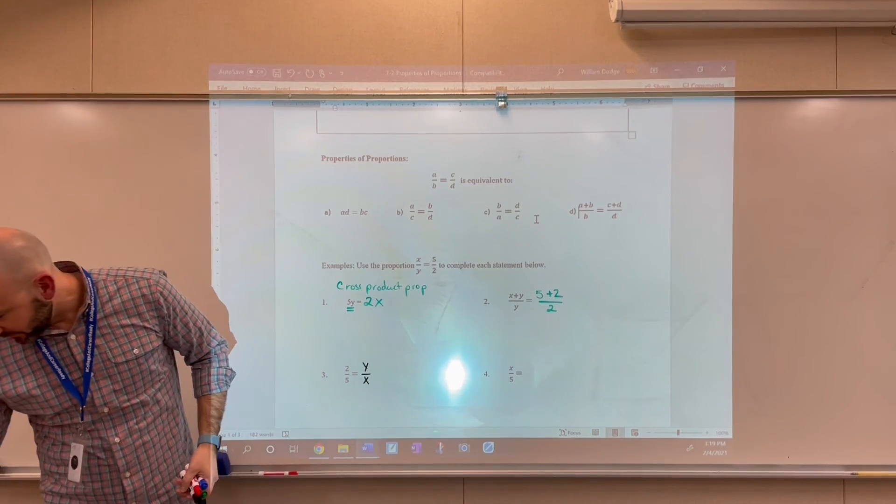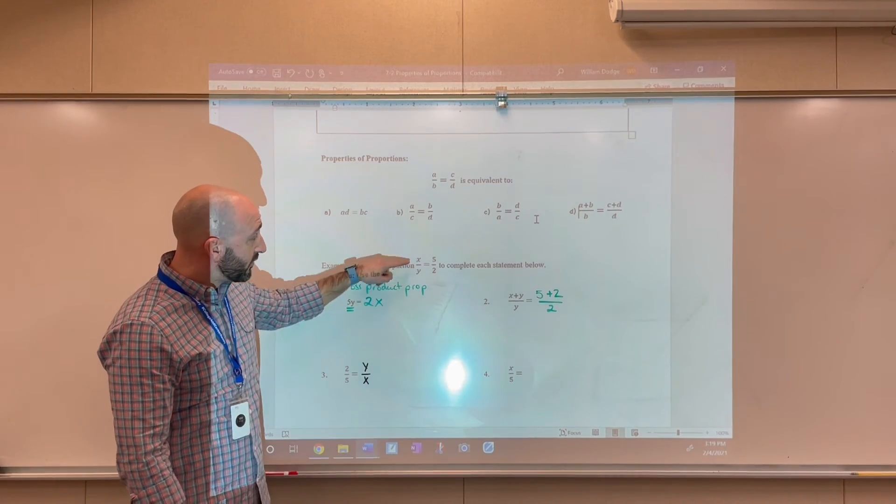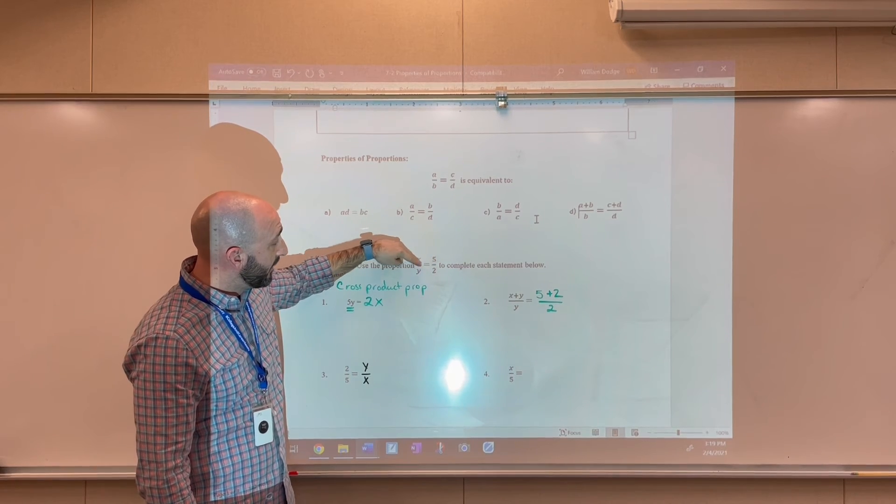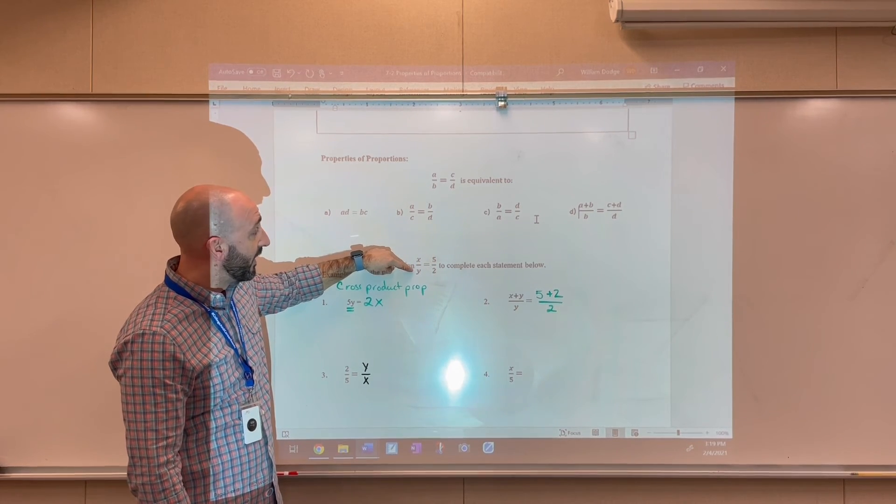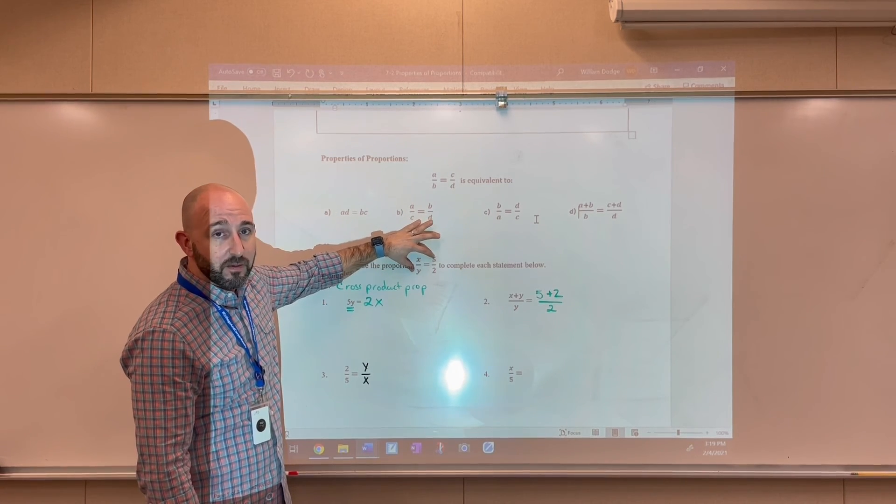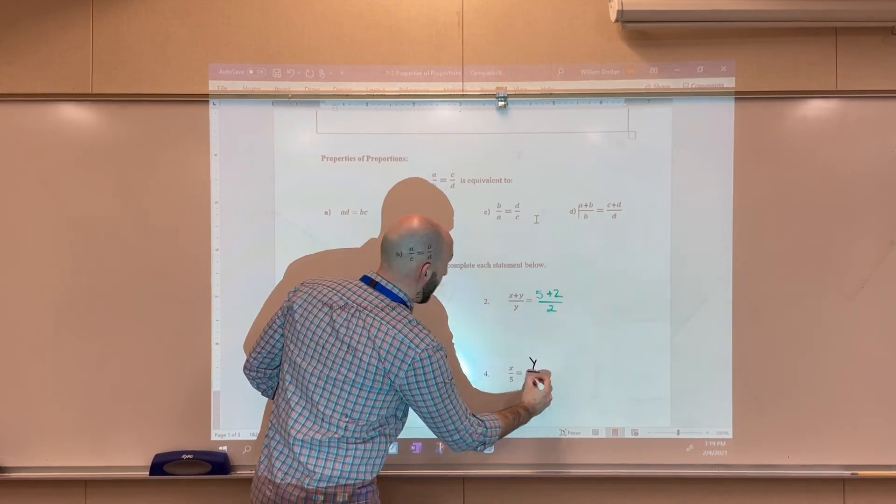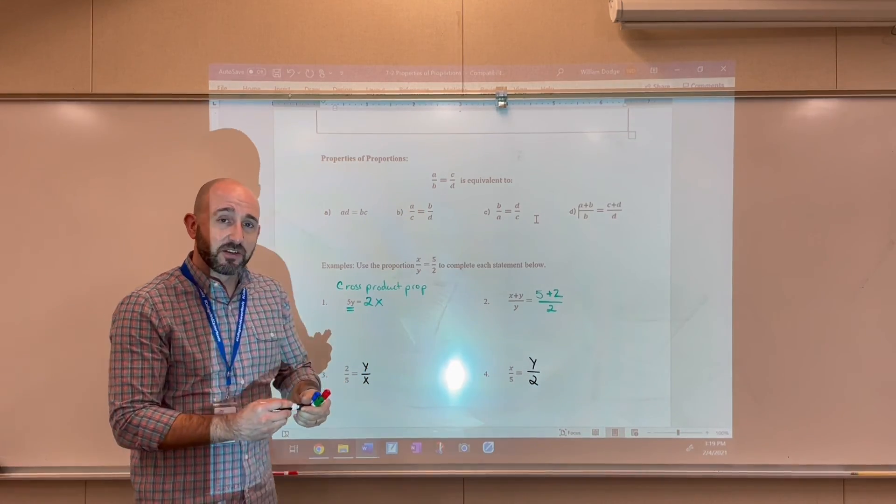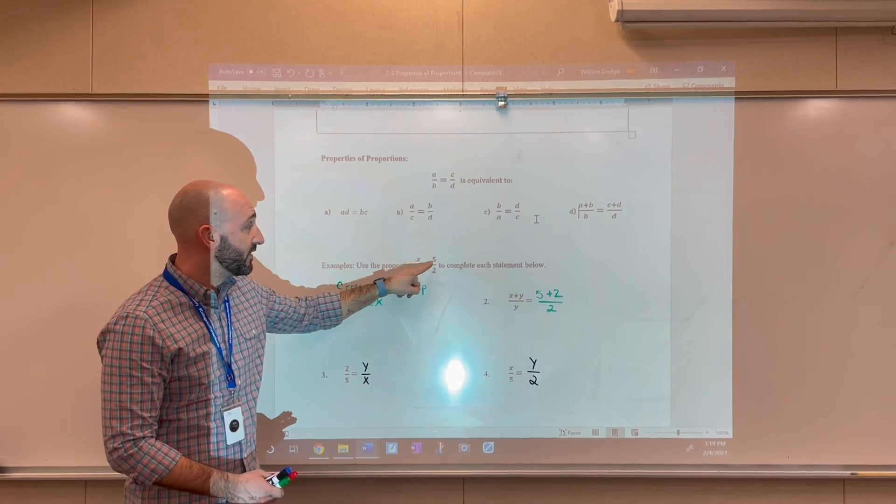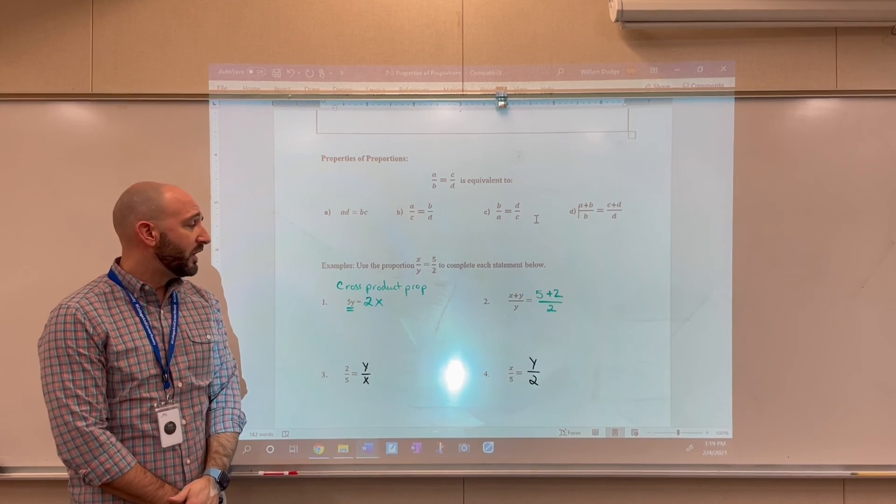And then the last one, we have x over 5. So clearly it looks like what has happened here is that 5 has been moved to the denominator of the fraction on the left-hand side. So what we're doing here is we're interchanging the means. So to get an equivalent expression, we'd have to write this as y over 2. And that just illustrates how the interchange means property would work. So we can switch the position of the means, and that's going to maintain the balance in this equation. It's going to give us a true equation.